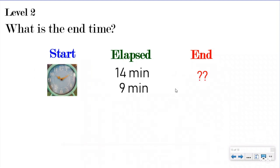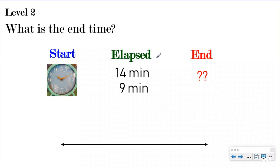For Level 2, they give you the start time and elapsed time again, but in an analog clock format. They ask you to read the clock and then use the timeline to find the end time. They still gave you the start time and elapsed time - they just made the start time look a little different. The first thing I would do is take my clock and write down the time on the side so I can clearly see what time it is.